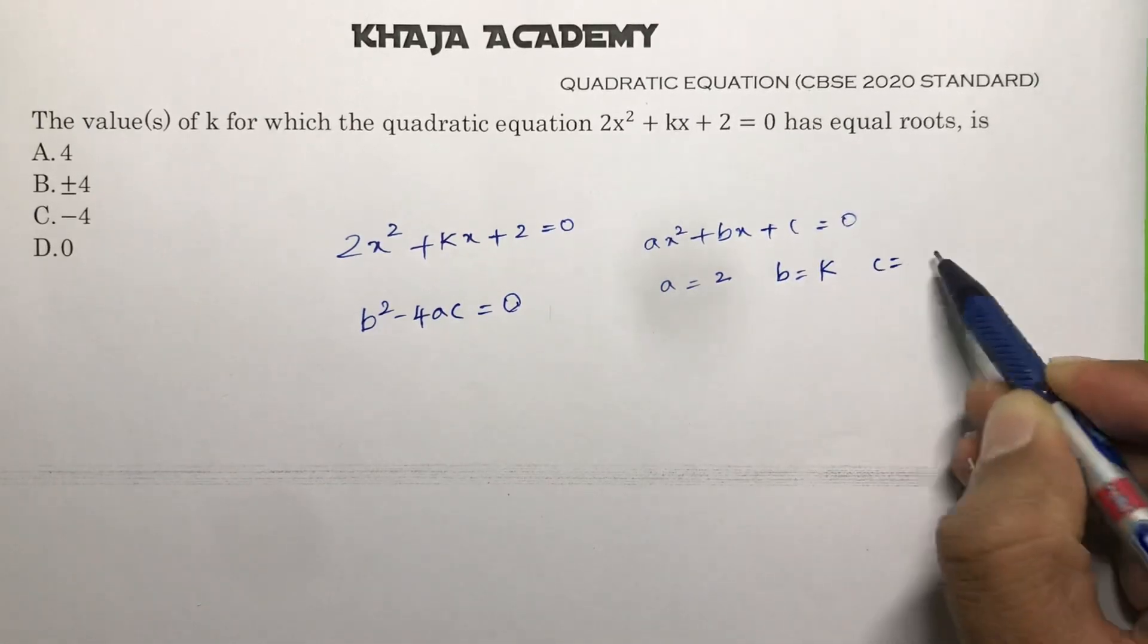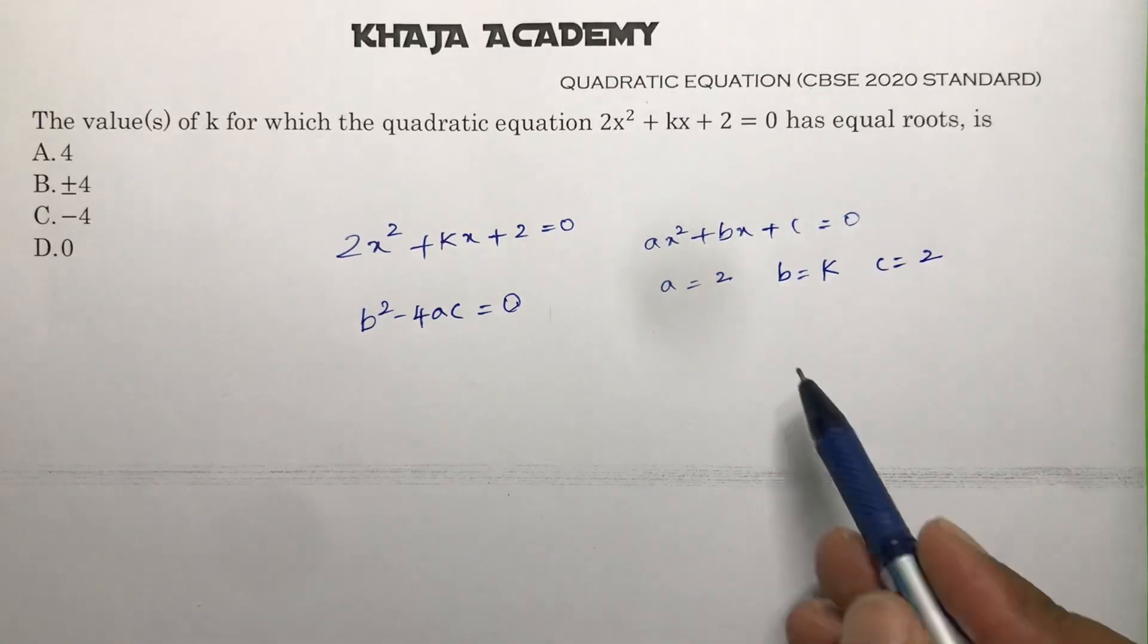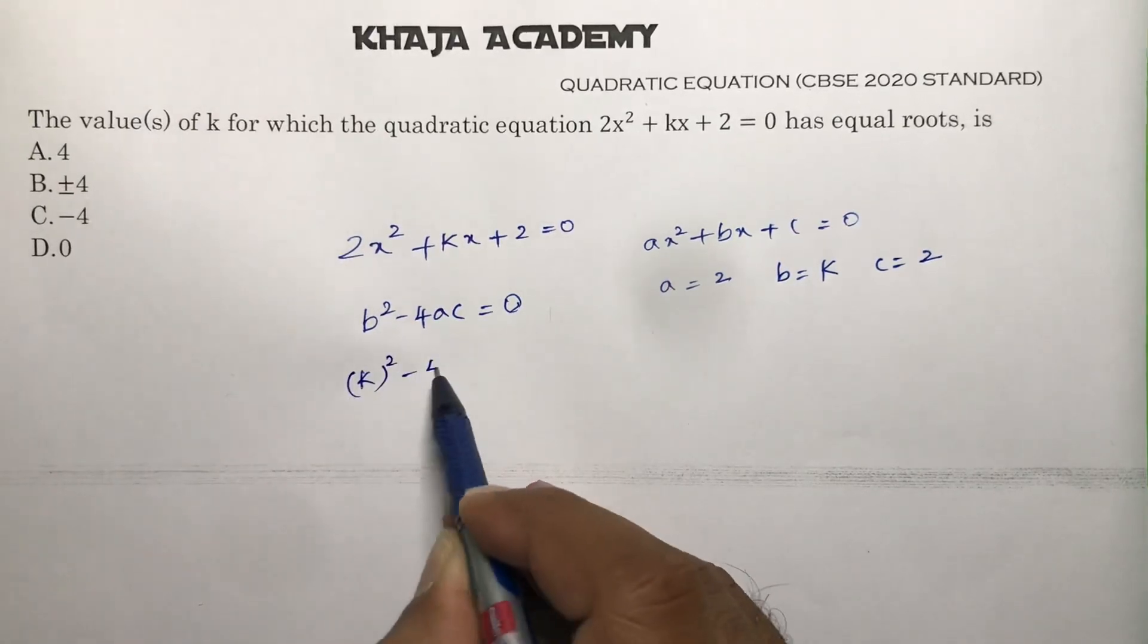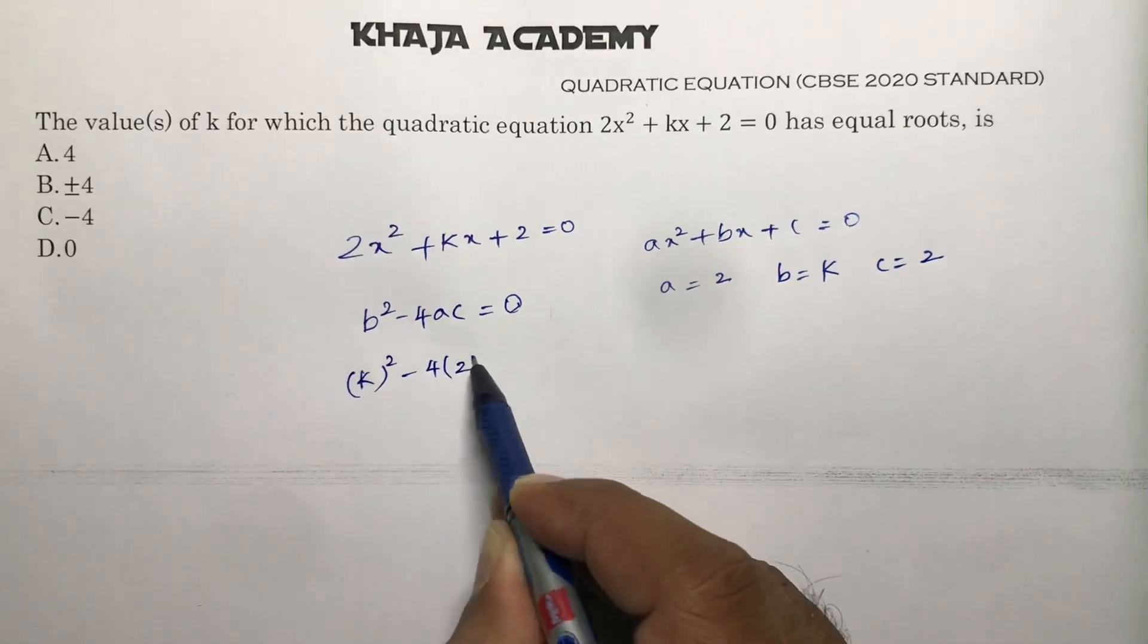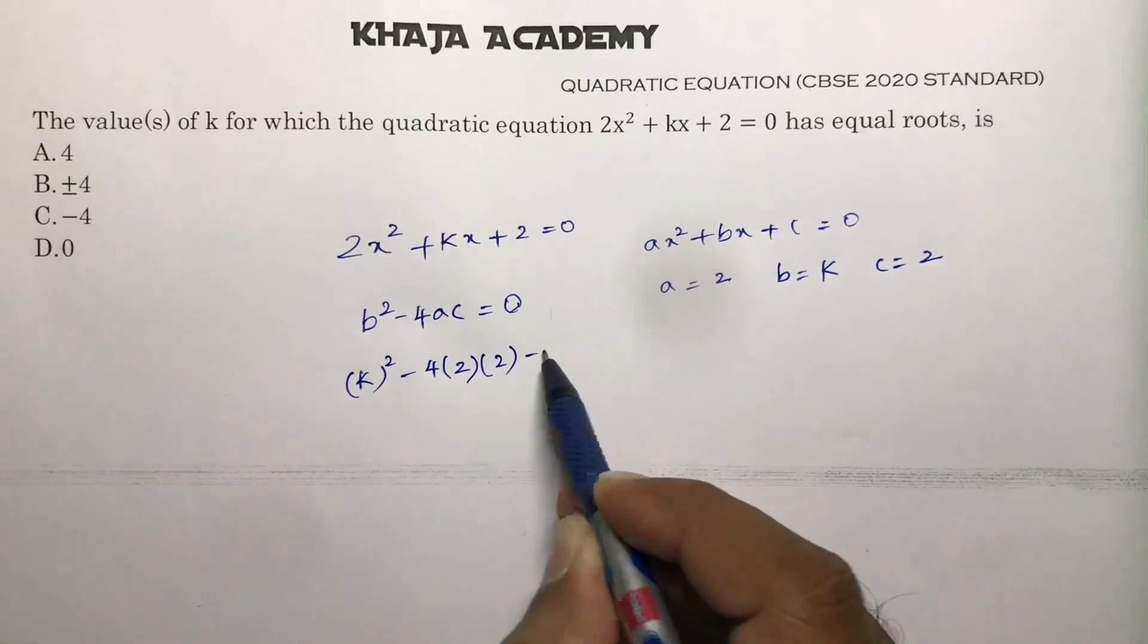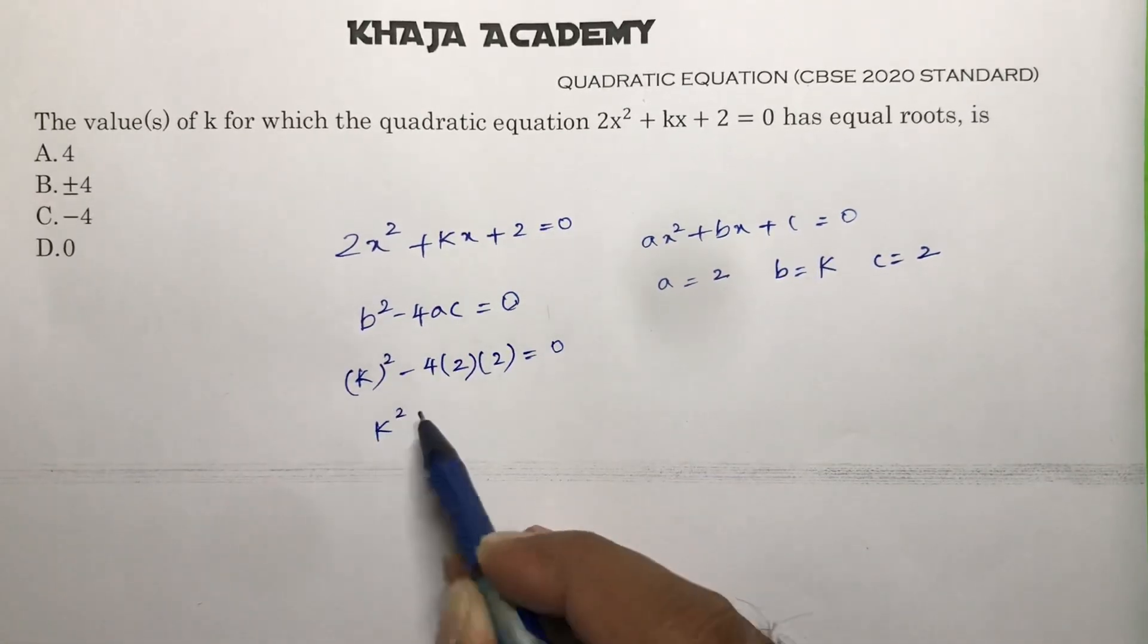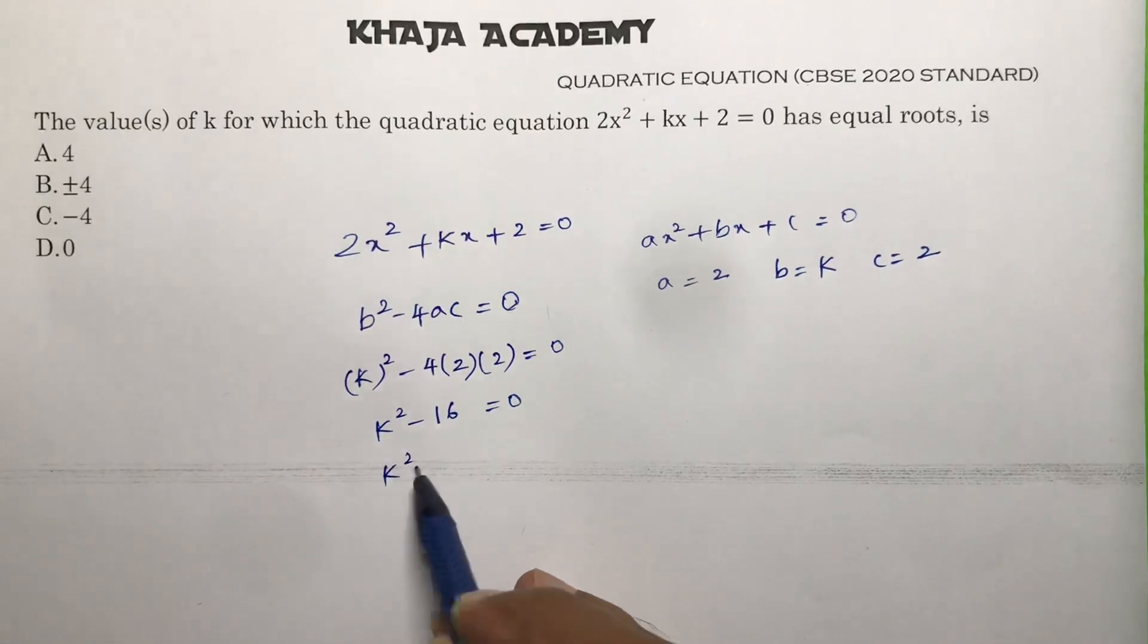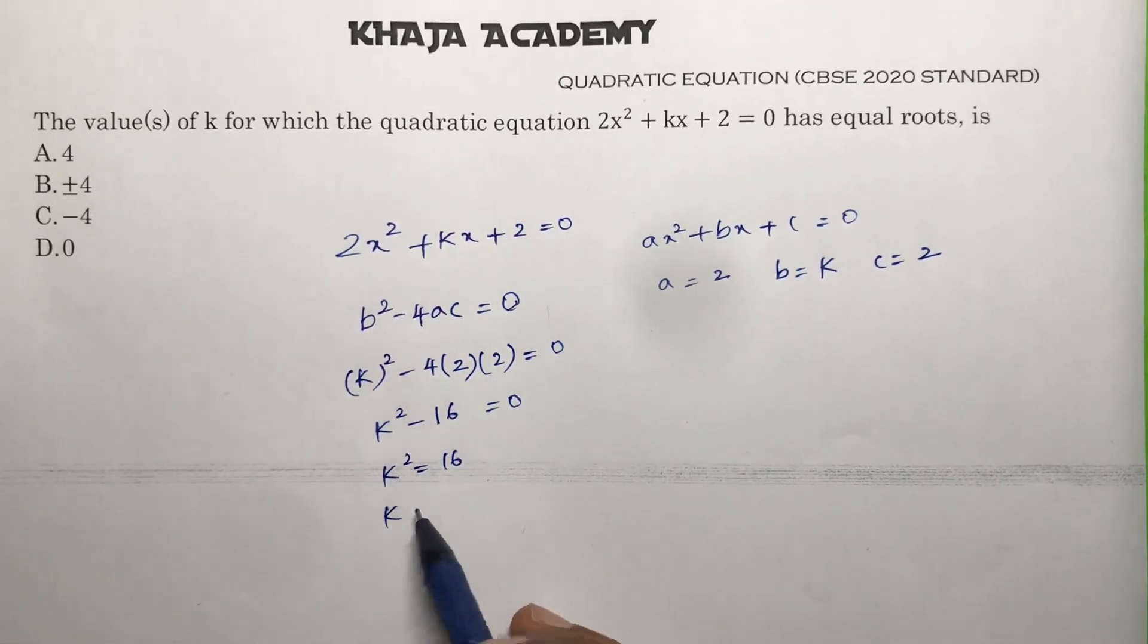Substituting the values, k² - 4(2)(2) = 0, so k² - 16 = 0. Therefore, k² = 16, and k = √16, which gives k = ±4.